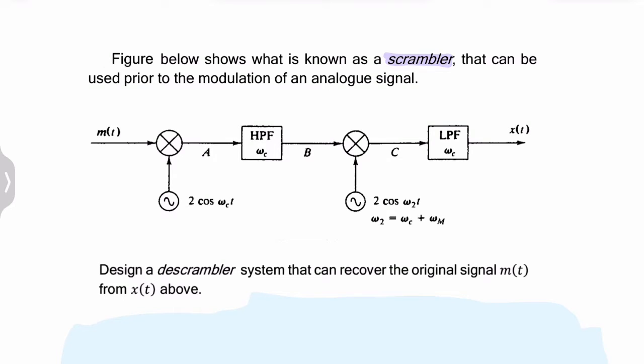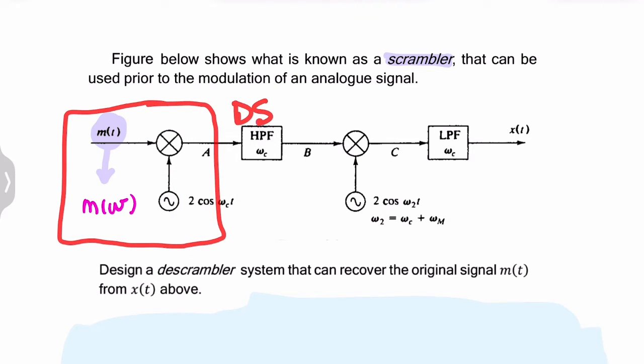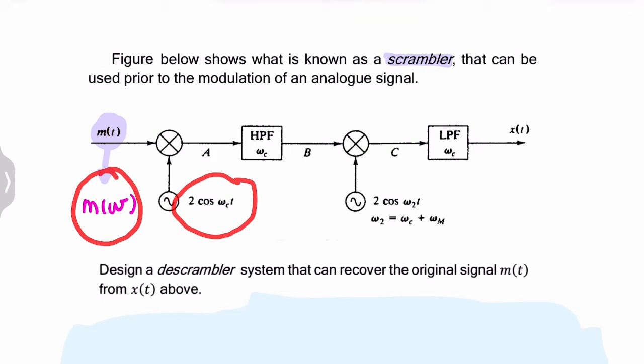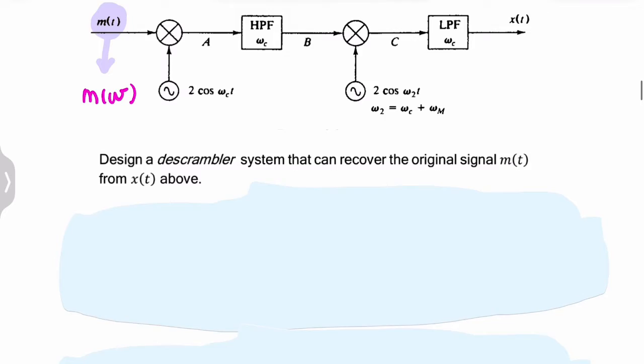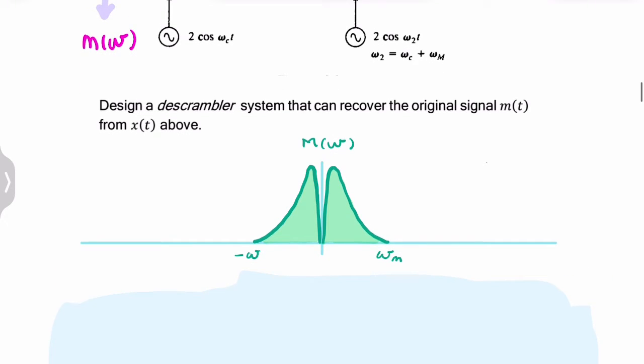If we start with our input signal m(t) in the frequency domain, that would be M(ω), and then we multiply that by a high frequency carrier. This is essentially a DSB suppressed carrier modulator. This is the frequency shift property or modulation property of the Fourier transform. When you multiply a signal by a cosine, the spectrum of this signal is shifted.